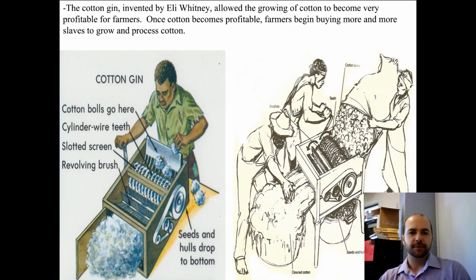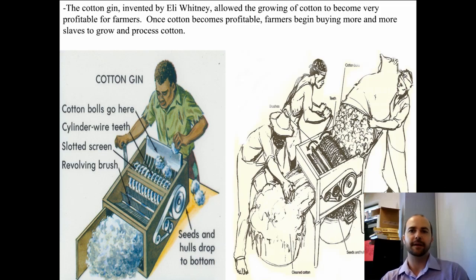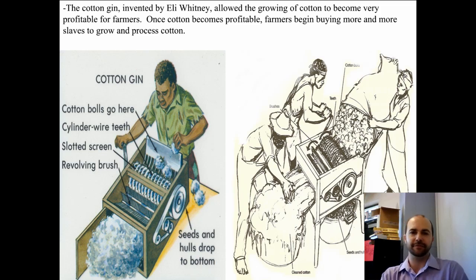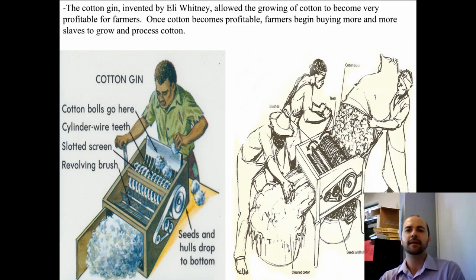Here's a picture of the cotton gin, invented by Eli Whitney. It allowed the growing of cotton to become very profitable for farmers. Before the cotton gin was invented, it took a slave probably a day to process about a pound of cotton. The cotton gin made that a hundred times faster.